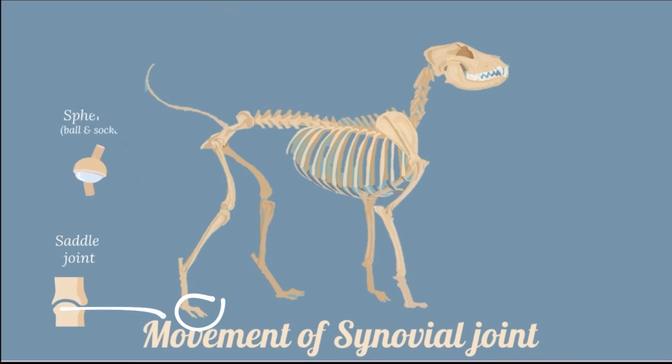Next is the ball and socket joint, or spheroid. It permits movement in nearly any direction. A spherical head on one bone fits into a cup-shaped depression in the other. Flexion, extension, abduction, adduction, rotation, and circumduction are all possible in the spheroid joint. An example is the coxofemoral joint.